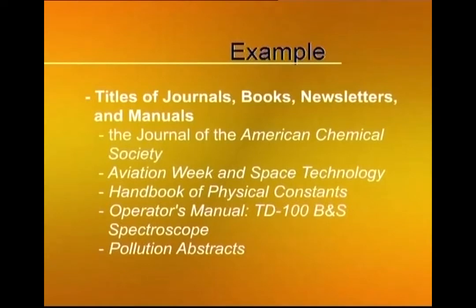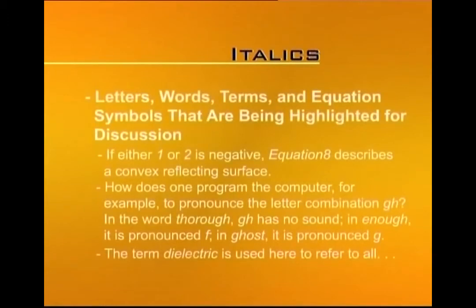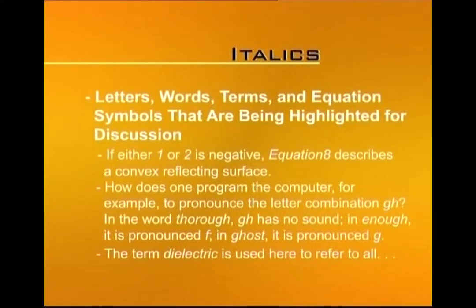Titles of journals, books, newsletters, and manuals are written in italics. Letters, words, terms, and equation symbols are italicized to highlight them for discussion. For example, if either 1 or 2 is negative, equation 8 describes a convex reflecting surface — here 'equation 8' is italicized so that it can be highlighted. Similarly, words can be italicized for emphasis, such as the term 'dialectic' when it is being defined.